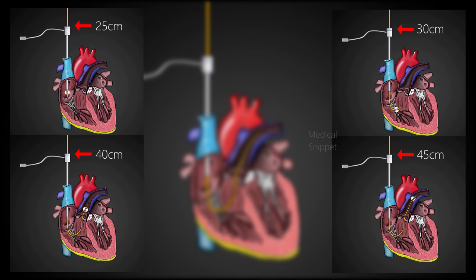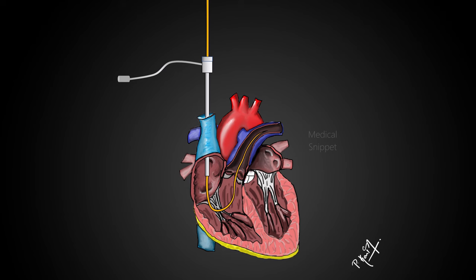These are only approximate measurements. Once the procedure is complete, a chest x-ray is taken to check the position of the pulmonary artery catheter.